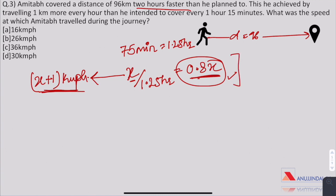This is the original speed in normal circumstances and this is the new enhanced speed. So as we know the equation, we have to put the values and check for the options.